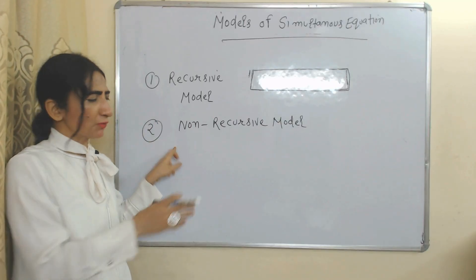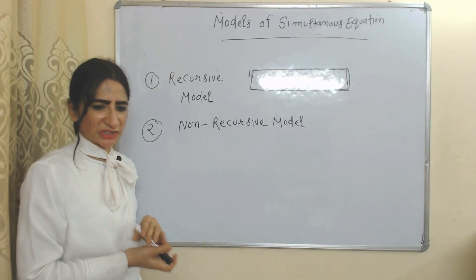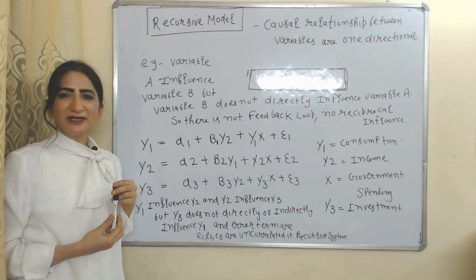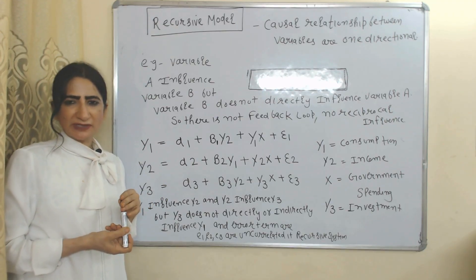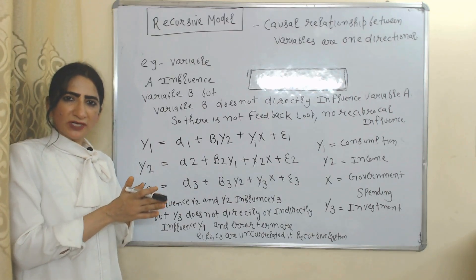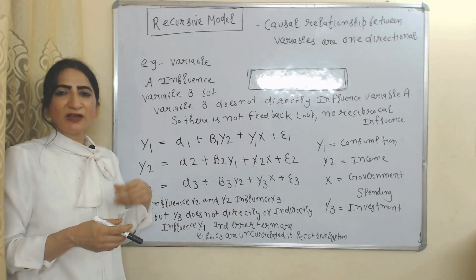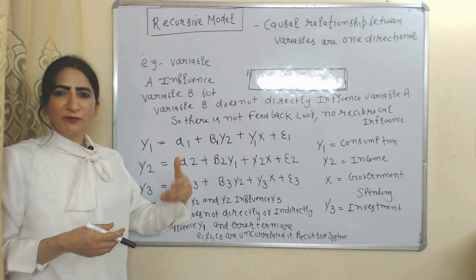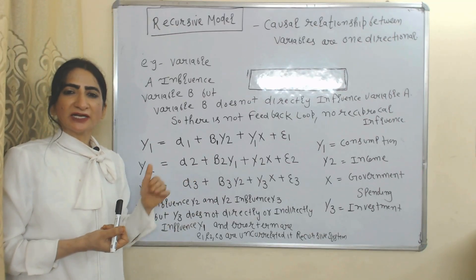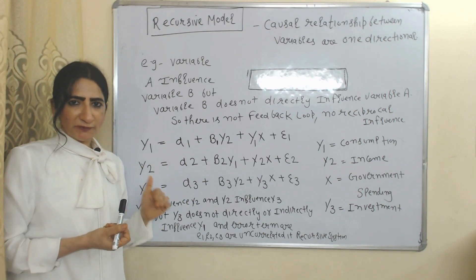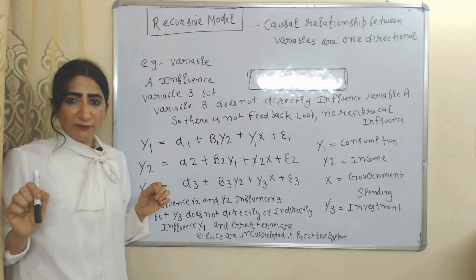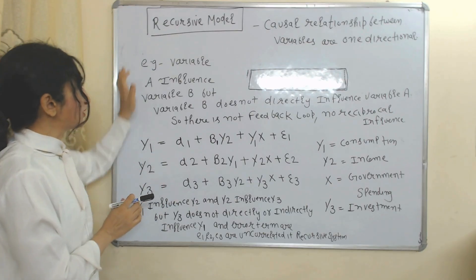We will discuss each one by one. Under the recursive model, causal relationships between variables are one-directional. For example, variable A influences variable B, but variable B does not directly influence variable A. That means there is no feedback loop and no reciprocal influence. This is the recursive model.